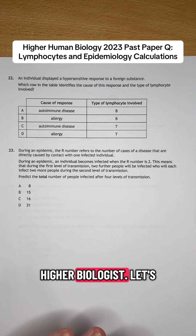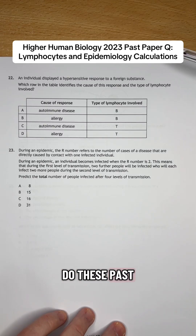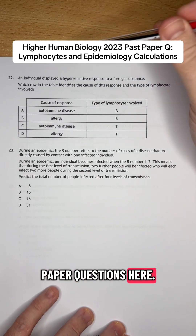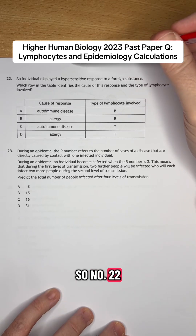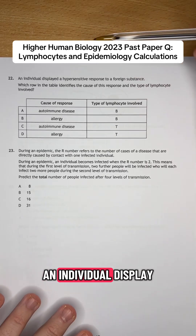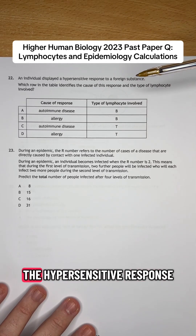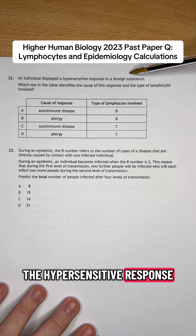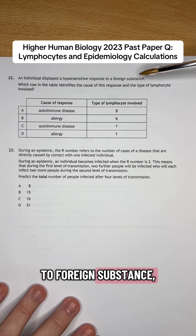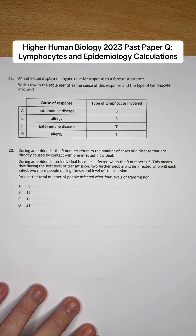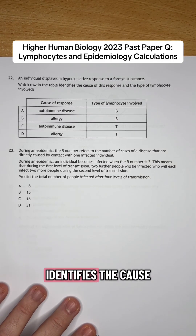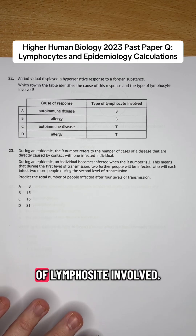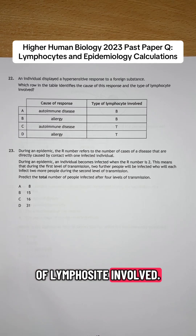Hi our biologists, let's do these past paper questions together. So number 22 says: an individual displayed a hypersensitive response to a foreign substance. Which row on the table identifies the cause of this response and the type of lymphocyte involved?